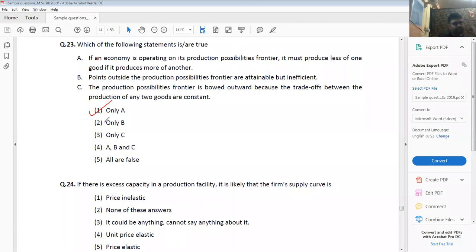Production possibility frontier question - only A will be true. If there is excess capacity in a production facility, it is likely that the firm supply curve is elastic. Because I have excess capacity, I will want to produce more. So if I get a little bit extra price, I will be able to produce a lot more. So it has to be price elastic.